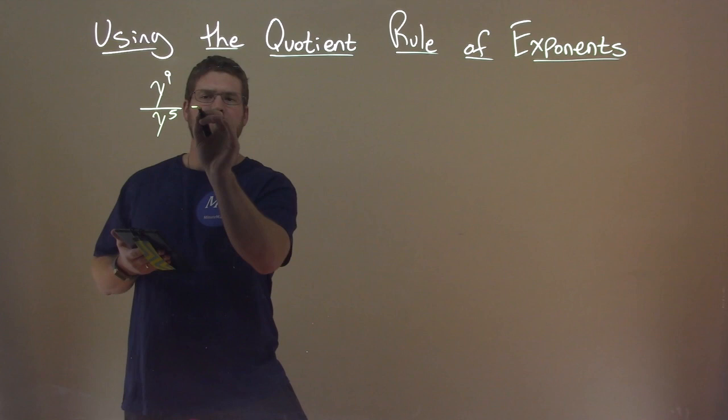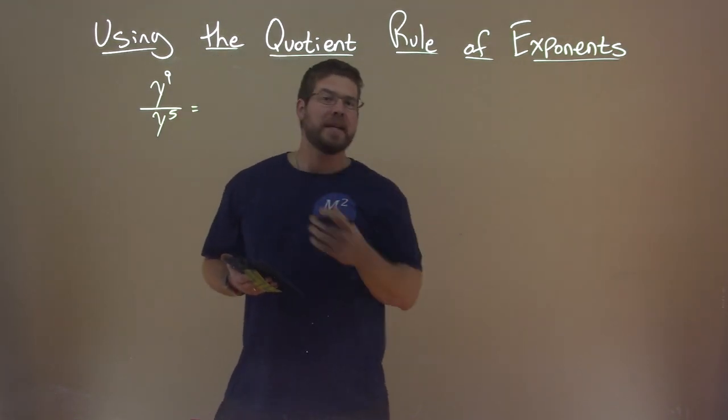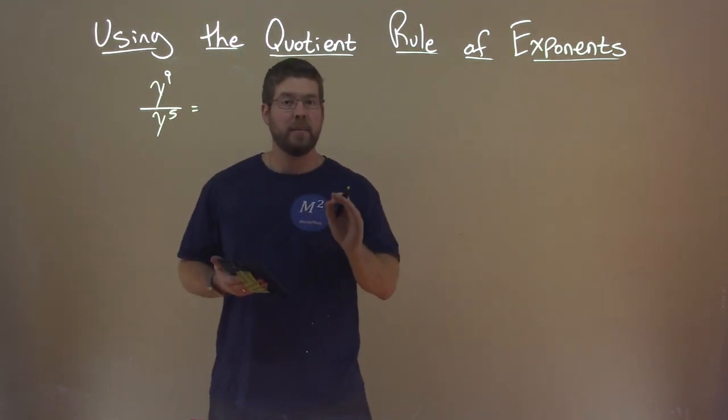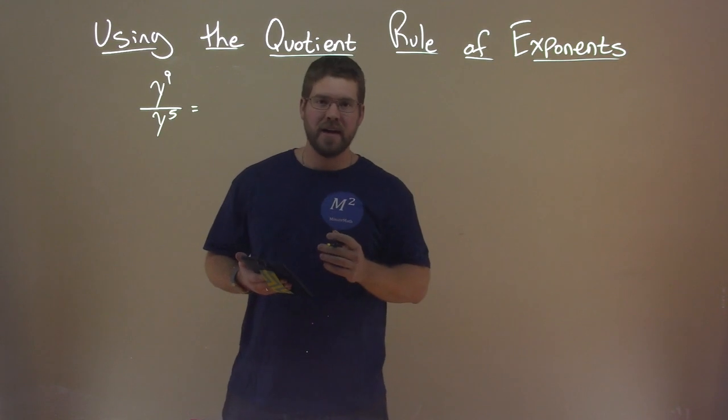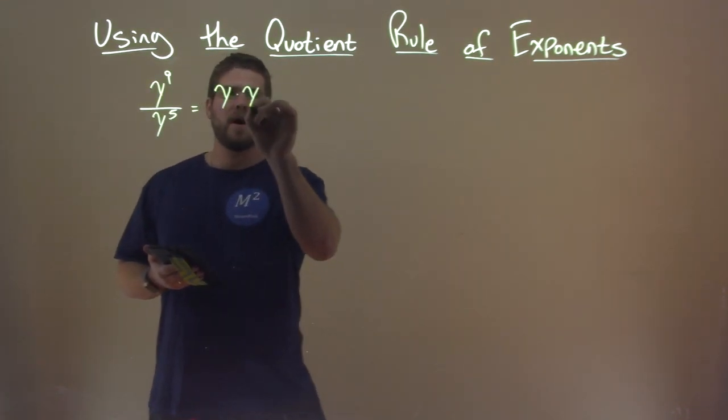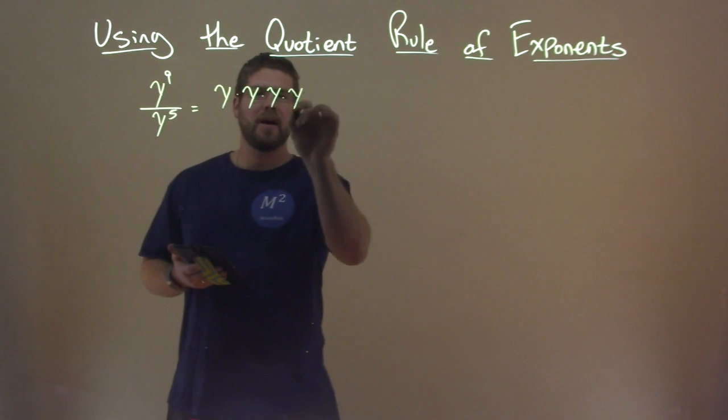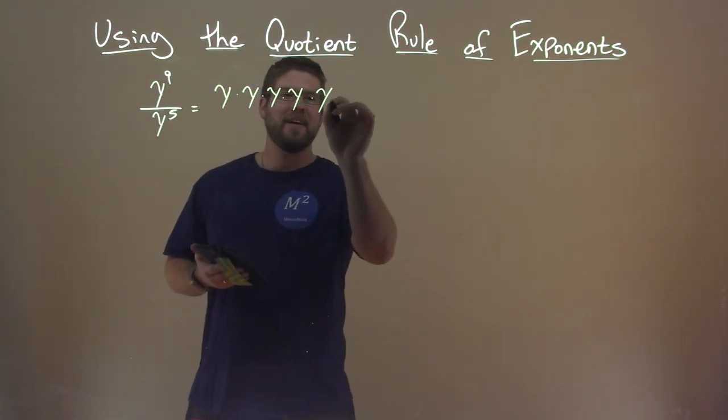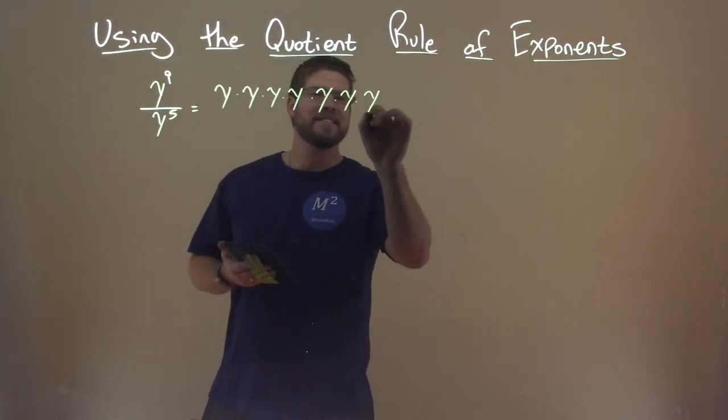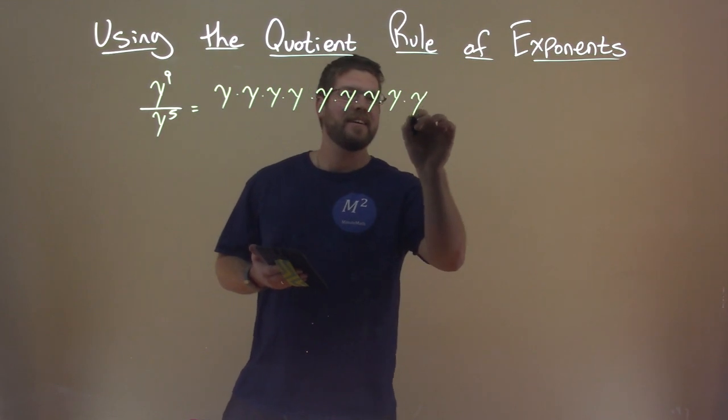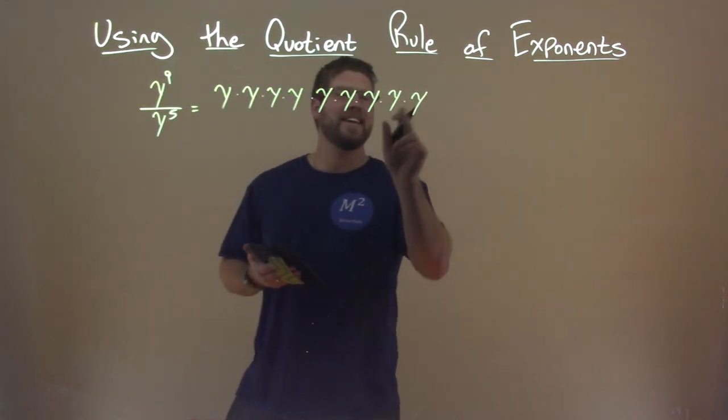So, let's expand this. y to the ninth power is y times itself nine times. So, we have y times y times y times y, that's four, times y, five, six, seven, eight, nine. One, two, three, four, five, six, seven, eight, nine. We're good.